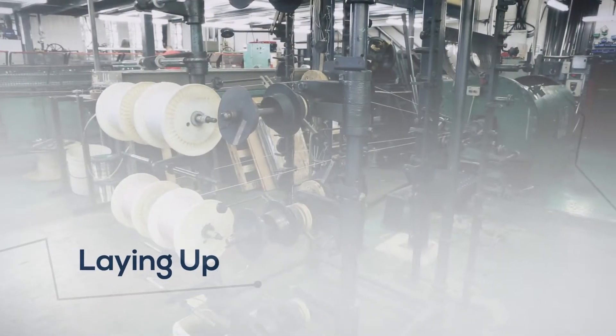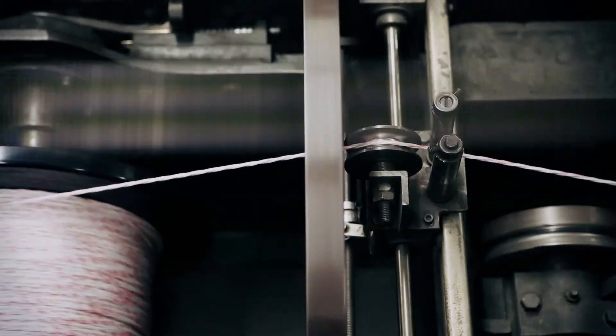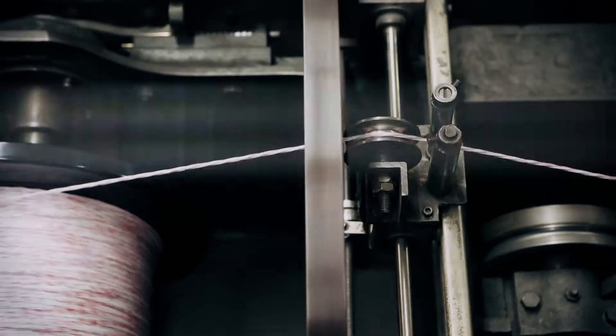The insulated cores are put on a laying up machine. This allows for many cores to be twisted together to create from 2 to 12 cores or up to 6 pairs.